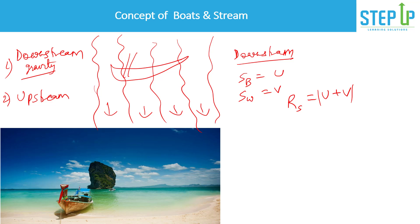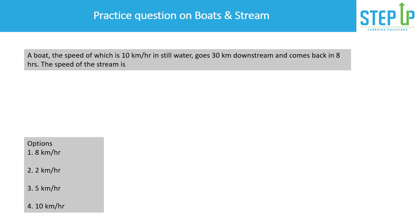When going upstream — similar to walking up a hill where gravity pulls you back — the water pushes you back. So the relative speed in upstream = speed of boat minus speed of stream = u − v. This is the only core concept for boats and streams. Let's attempt a question to further this understanding.